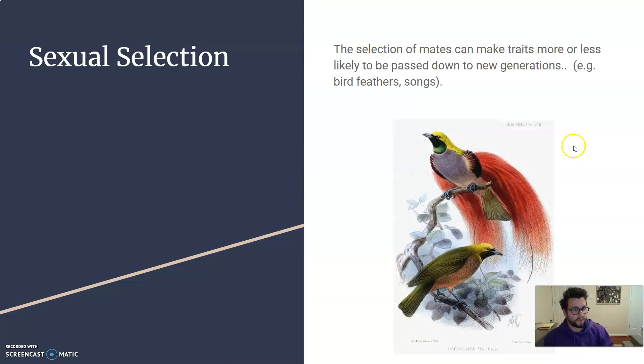So birds do a lot of this with the feather coloring and the songs. They choose mates based off of how pretty they are or how good the songs they sing. And over time you can measure changes in the colors that are appearing in the feathers of the kinds of notes that they're adding to their songs. These can develop and change over time too. And it has led to some really cool varieties of birds that we see.